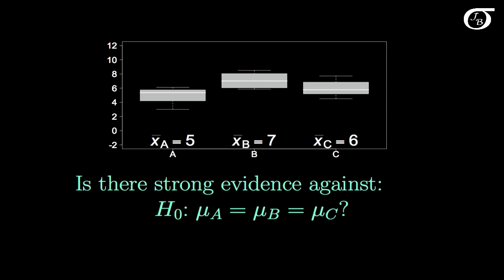This is what one-way analysis of variance is going to test. The alternative hypothesis is simply going to be that the null hypothesis is wrong, or in other words, that the population means are not all equal.